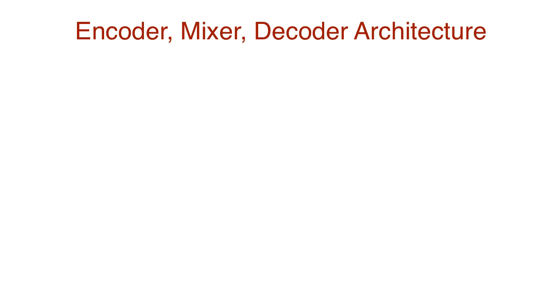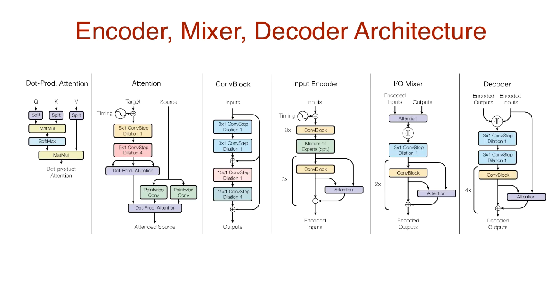Like I mentioned before, the encoder and decoder are constructed from convolution units, attention mechanisms, and sparsely gated MOEs. The encoder has 6 convolution blocks and a mixture of experts layer. The IOMixer contains 2 attention and convolution blocks, and the decoder contains 4 attention and convolution blocks.